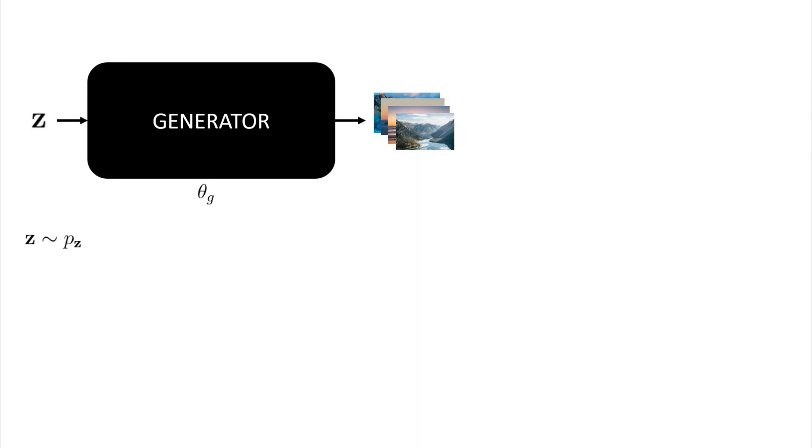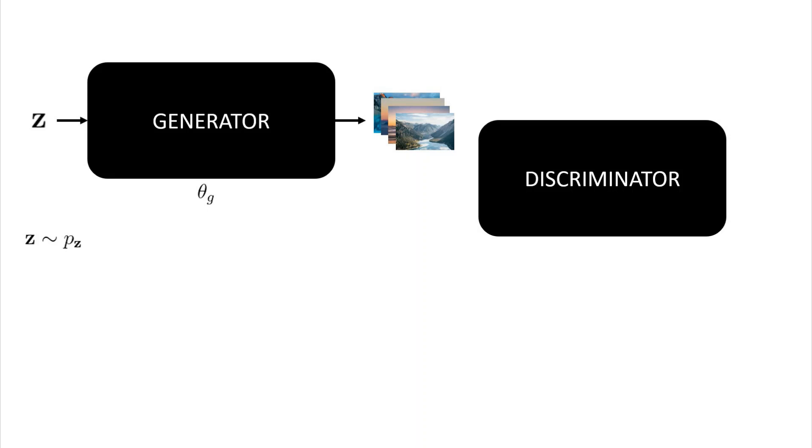This is where we introduce something we will call the discriminator. The discriminator will be a discriminative model, with parameters we should call theta D, that takes in a landscape image as its input and outputs the probability the input image is a real landscape image, as opposed to a fake landscape image created by the generator. So now, we simultaneously train the generator and discriminator, where we are training the generator to fool the discriminator, whilst we train the discriminator not to be fooled by the generator.